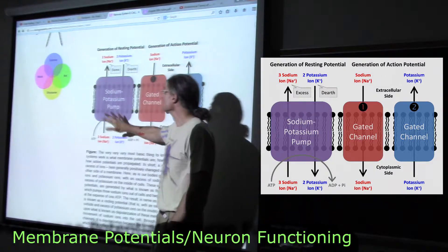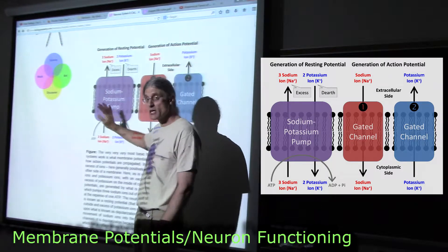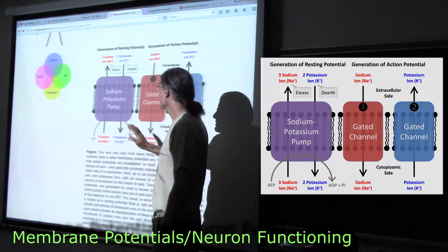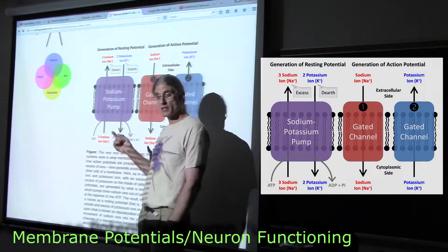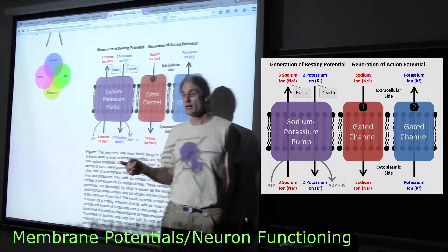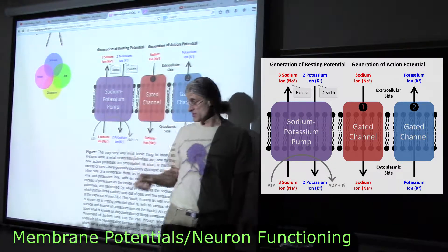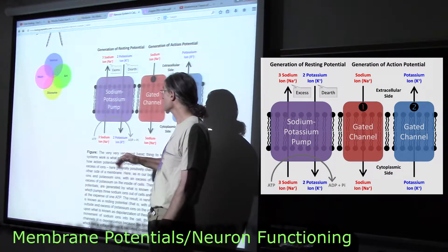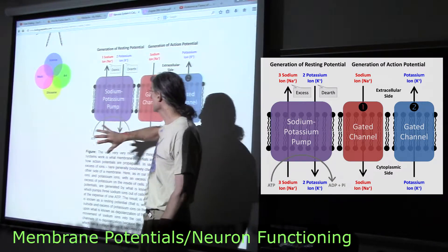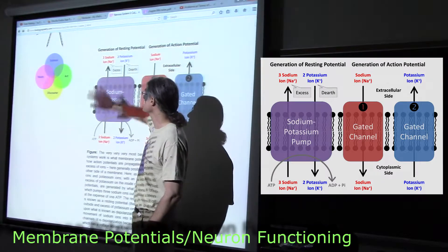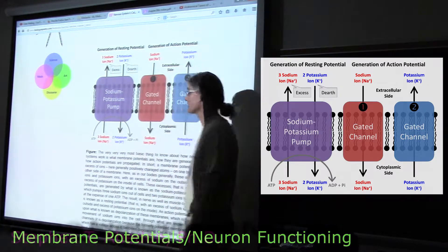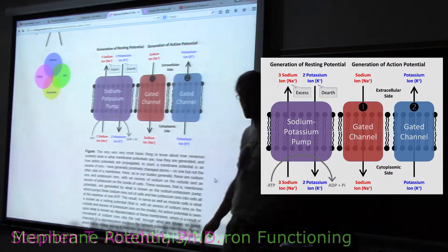We've got this pumping of sodium and potassium constantly ongoing in our cells. This uses up quite a bit of energy. The result is we end up with lots of potassium inside the cells and lots of sodium on the outside of the cells. All of our cells do this.